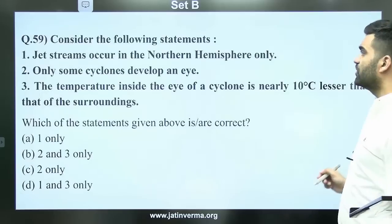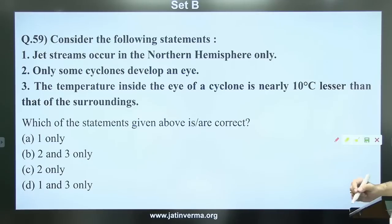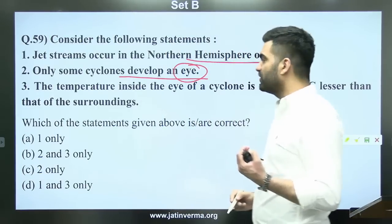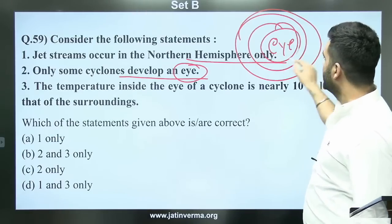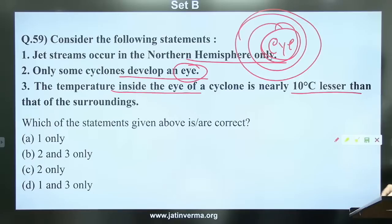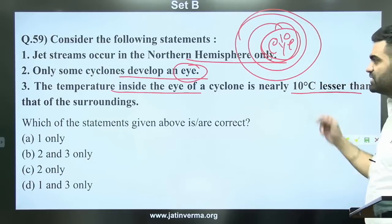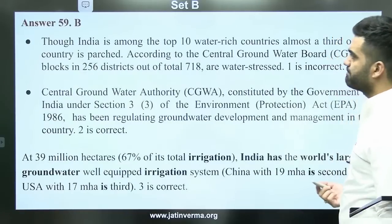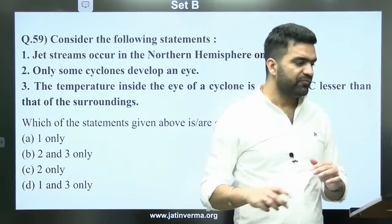Question 59: Jet streams occur in the northern hemisphere only; only some cyclones develop an eye; the temperature inside the eye of a cyclone is nearly 10 degrees Celsius lesser than that of the surrounding area. Cyclones were heavily in the news, so the concept of the cyclone's eye — the center part — was discussed. The answer to question 59 is B. The eye of a cyclone is actually warmer than the surrounding area, not cooler.